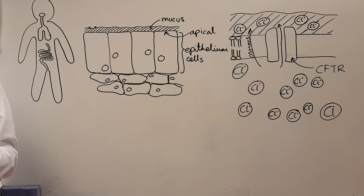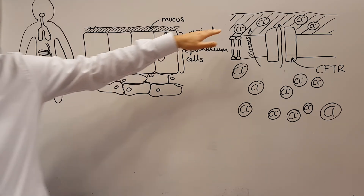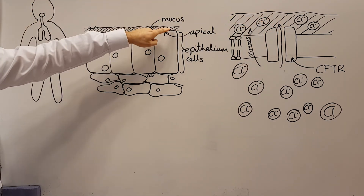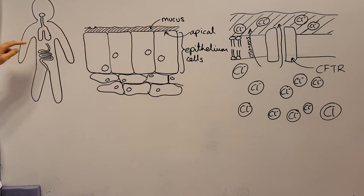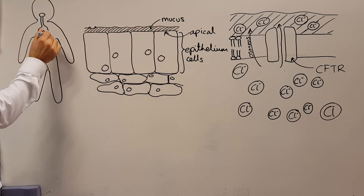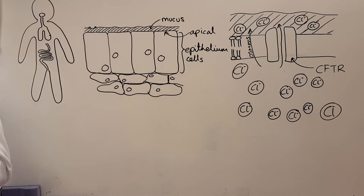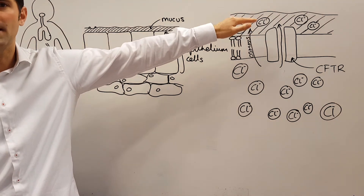Mucus should be thin and watery so it keeps moving along the epithelium. In the lungs, mucus constantly moves out — normally it goes back down into your throat and stomach without you noticing. If you've got a cold, you produce more mucus than normal, giving you a runny nose. That's what you want — runny, watery mucus.